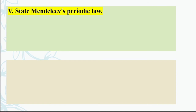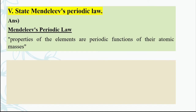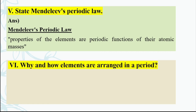The next question is: State Mendeleev's periodic law. The statement is: 'Properties of the elements are a periodic function of their atomic masses.' Mendeleev arranged elements based on atomic masses and observed their properties accordingly.